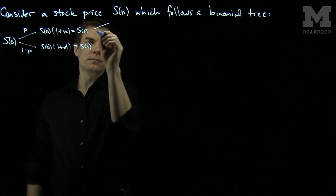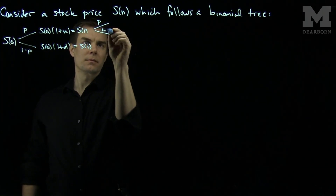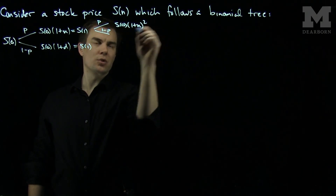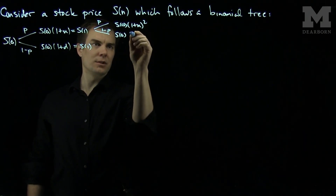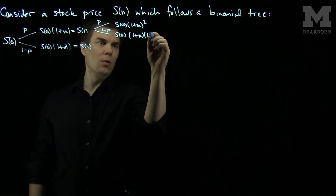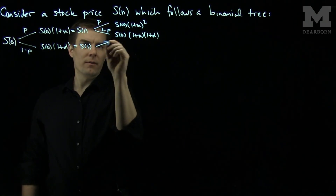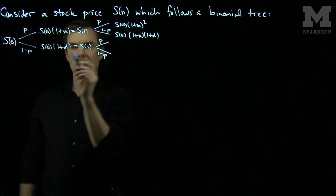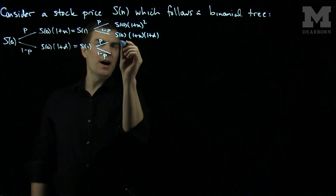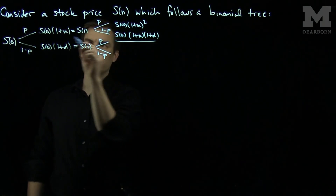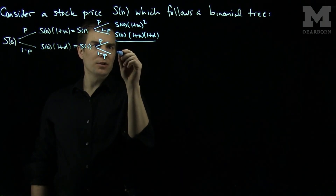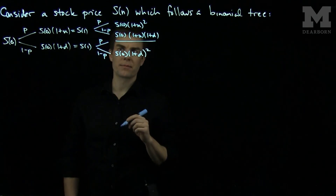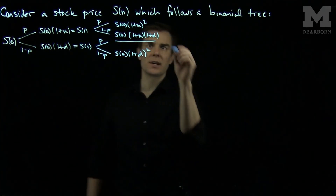Then at time 2, I can go to S0(1+u)², or S0(1+u)(1+d). From the bottom, I can go up with probability p or down with probability 1-p. If I went down and then up again, I'll go back to the same value as if I went up and then down. And I can also go to S0(1+d)². So those are the three possible values of the stock price at time 2.